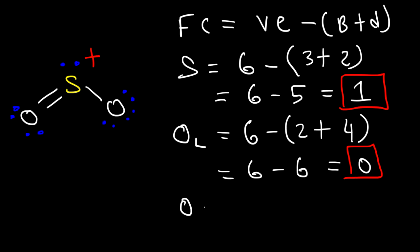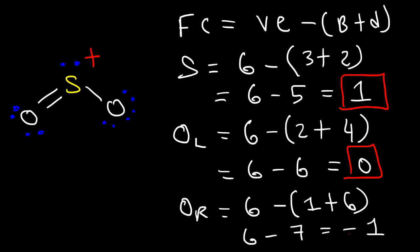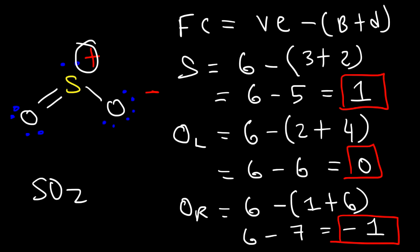What about the oxygen on the right side? It also has six valence electrons, but it only has one bond in this structure and six dots. So one plus six is seven, and six minus seven is negative one. So the formal charge on the right oxygen is negative one. SO2 overall is a neutral molecule — adding plus one and negative one gives zero. Even though sulfur dioxide is neutral, within that molecule you do have regions of positive and negative charge.